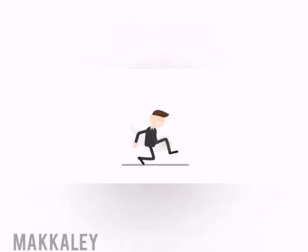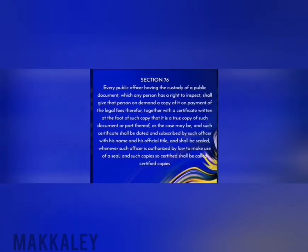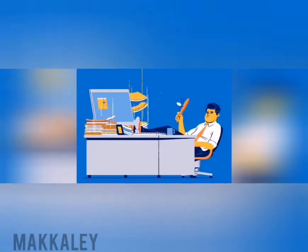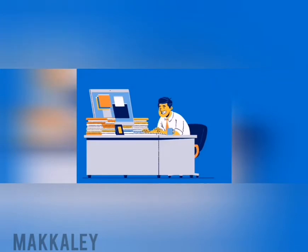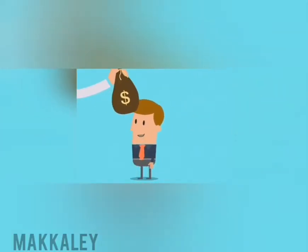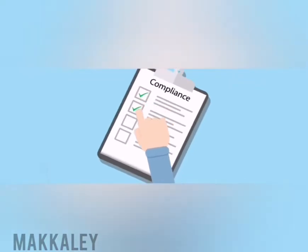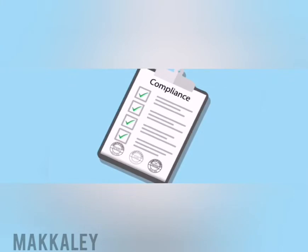The first type of secondary evidence is certified copies. Section 76 talks about certified copies. A public officer who has custody of a public document can give copies to a person requesting them after paying the legal fees. This officer must subscribe the certificate with his official name, title, and seal if required by law.